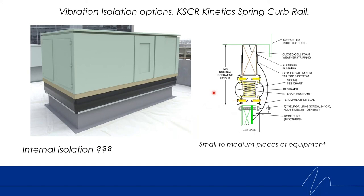After the isolation pad, we do have a lightweight Kinetics spring and curb rail. This comes as a curb and a rail — the unit sits down on top, and it comes with a weather seal that covers up all the springs. The unit sits on top of the top rail, compresses the springs, and the springs absorb vibration from the casing and equipment inside the air handling unit. Now, we know that spring and pad worked really well together, but unfortunately spring and spring do not work well together. So you must lock out your internal springs when setting that air handling unit on a spring rail.